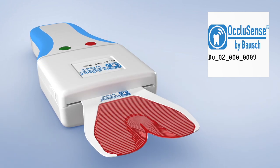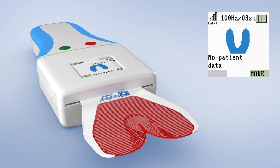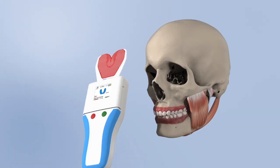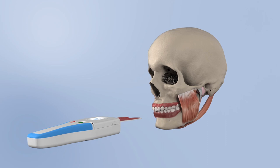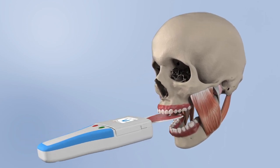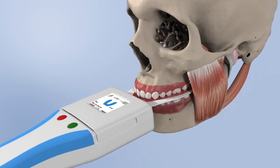The Occlusense device is being used in combination with a 60 micron thin single-use pressure sensor coated with red color. The disposable pressure sensor is being applied exactly like a conventional occlusion test foil.